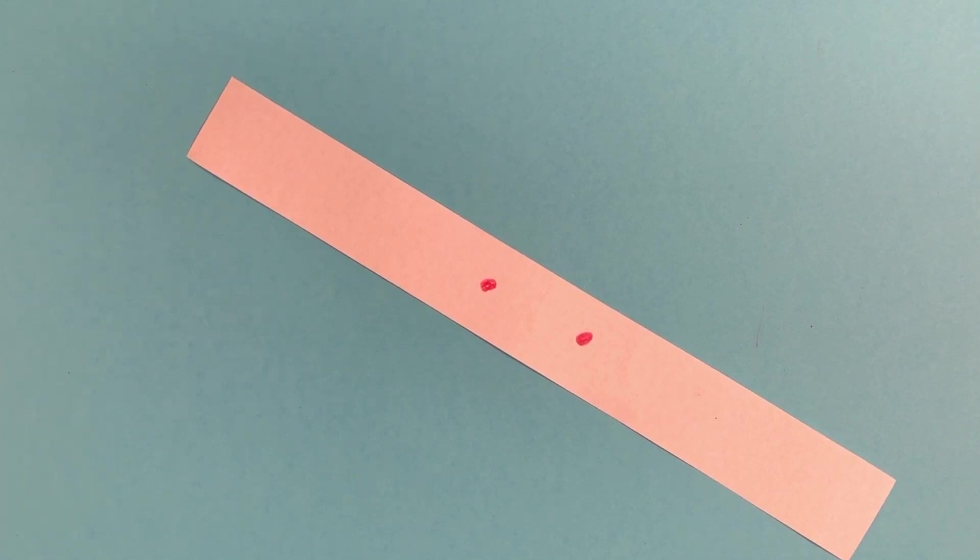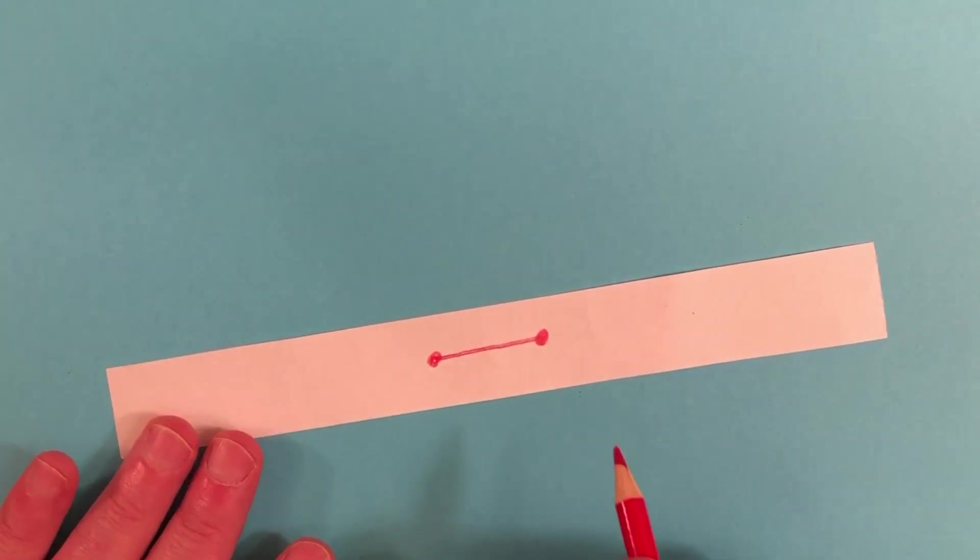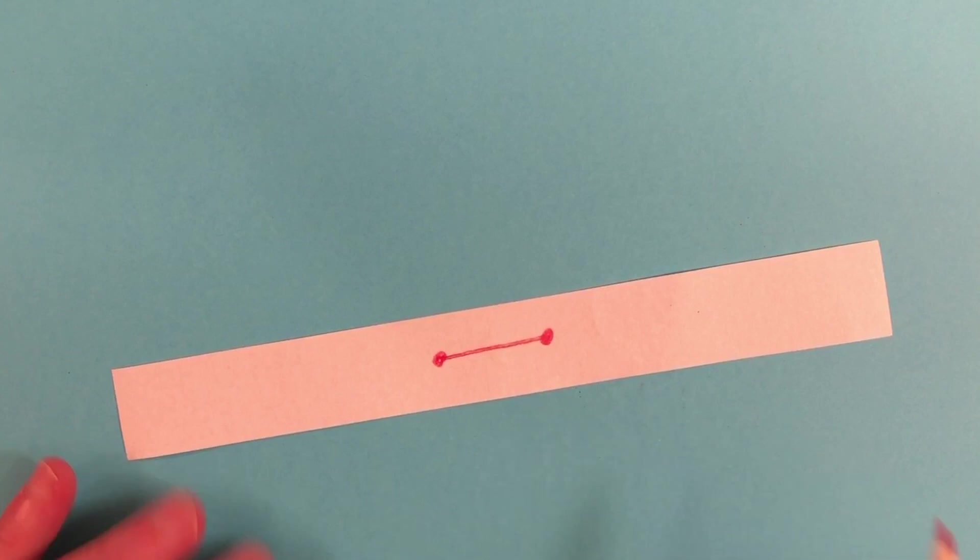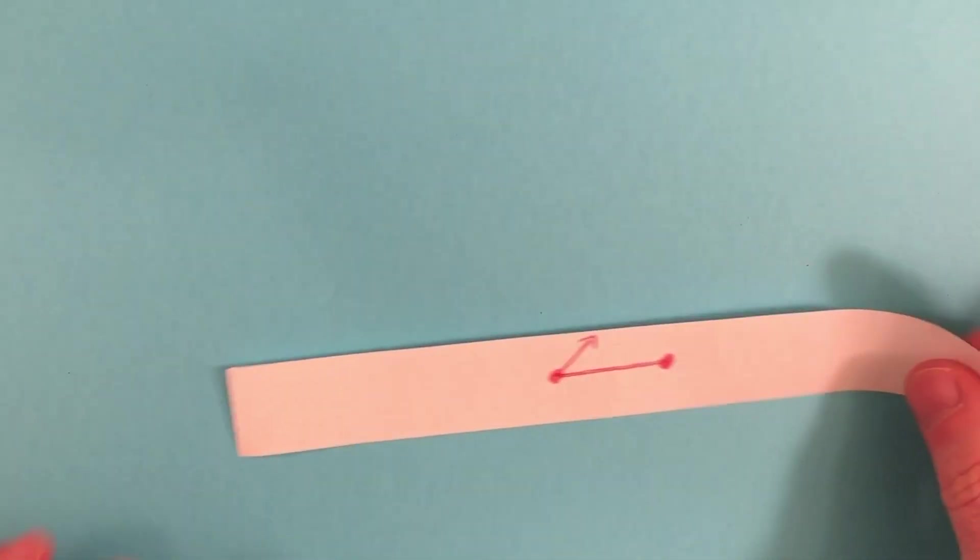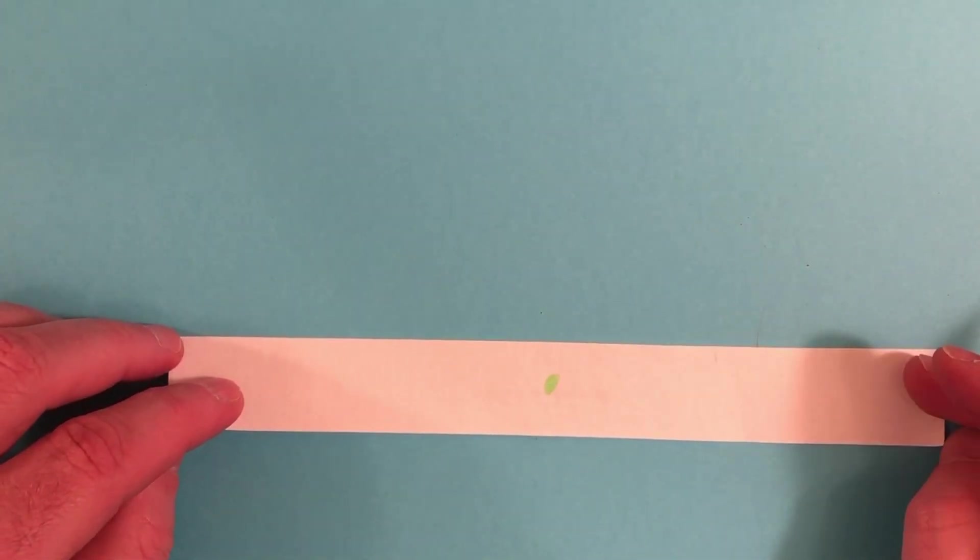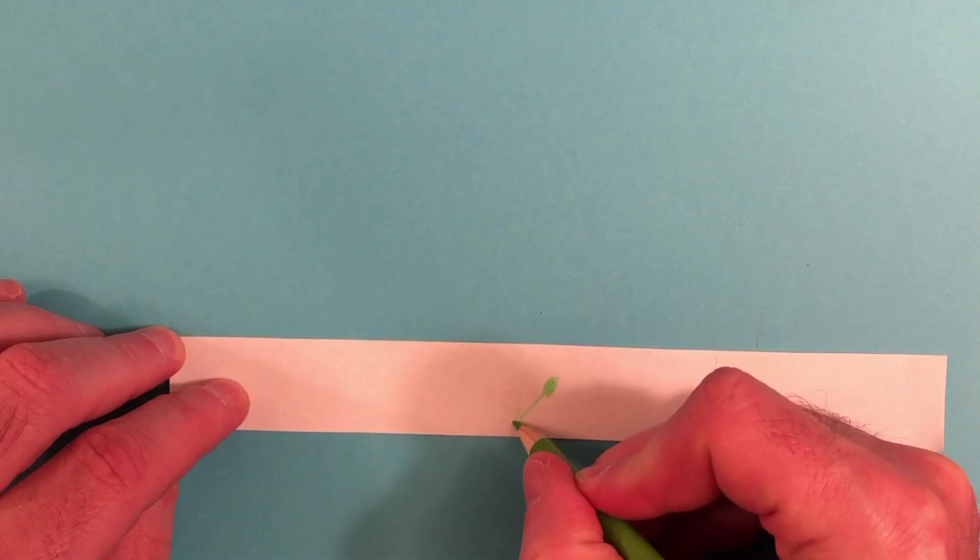One way to define if two points are on the same side is to draw a line from one dot to the other. If we can do so without crossing an edge, then they are on the same side. If we must cross an edge to connect them, then they are on different sides of the paper.